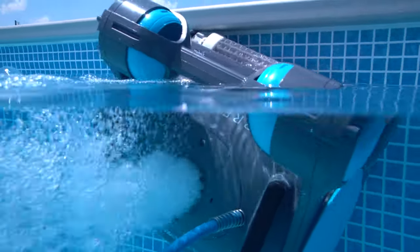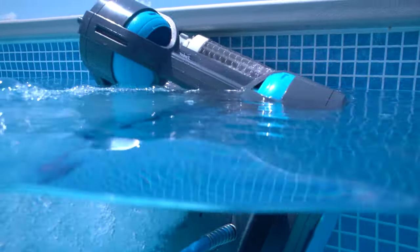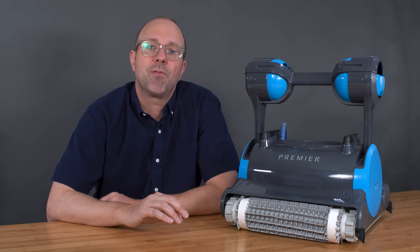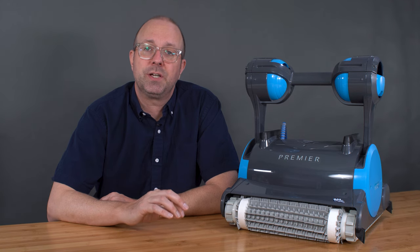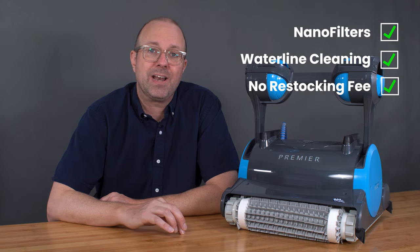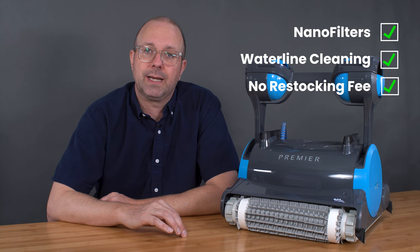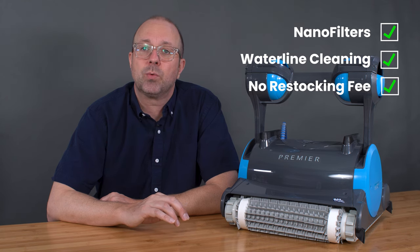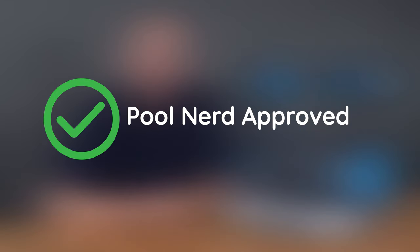Its three-year warranty, the longest available, gives you full protection on your pool's investment. To summarize, the Dolphin Premier has the three essential features I recommended: nano filters, waterline cleaning, and no restocking fee. Plus, the additional longer three-year warranty, giving the Premier the first robot that is pool nerd approved.